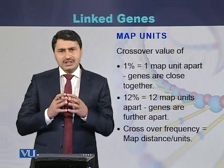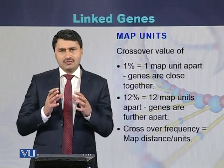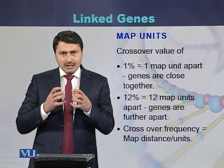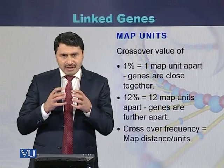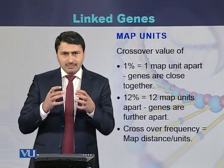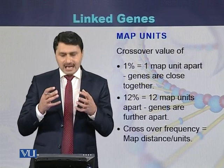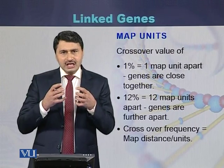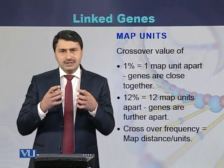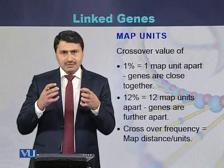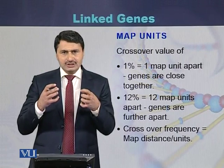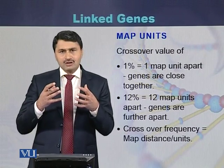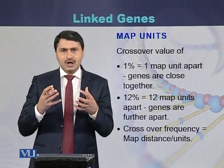The crossing over can be measured in terms of units. One percent crossover means one map unit. One map unit means the chromosomes are closely linked — they are not far away from each other and will inherit as a unit from parents to offsprings. But if the recombinant frequency is 12%, it means they are 12 map units apart — there is too much distance between the two genes, so there is a possibility they will have a crossover. Crossover frequency is measured in terms of map units or map distance.